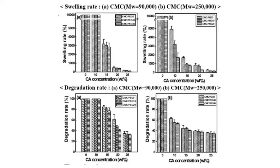The hydrogel was immersed in distilled water for 1 hour, then the moisture on the surface was removed to check the degree of swelling. After drying at 40°C for 24 hours, the degree of decomposition was determined. The degree of swelling and decomposition of CMC and PEG hydrogel tends to decrease as the content of PEG and CA increases. The degree of swelling and decomposition of the cross-linked CMC/PEG hydrogel with molecular weight 250,000 is inferior to that with molecular weight 90,000.